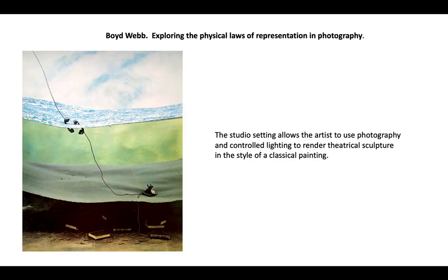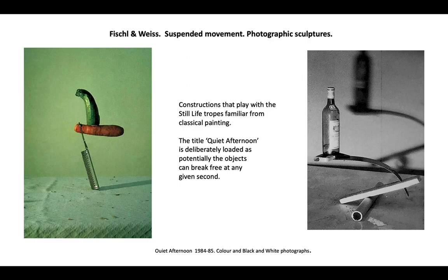Boyd Webb uses the studio to create fantastical, dreamlike sequences — he takes images of what he sets up and then dismantles it. These are photographic sculptures because only the photograph exists of them. Fischli and Weiss are probably the most famous exemplars — artists who spent a lot of time in the studio making strange balancing sculptures. The examples chosen show the tension of creating temporary sculptures from everyday objects. Consider what suits color versus black and white — black and white is more graphic and makes use of shadows, while color makes use of the objects' color.